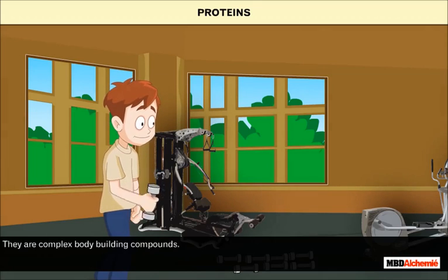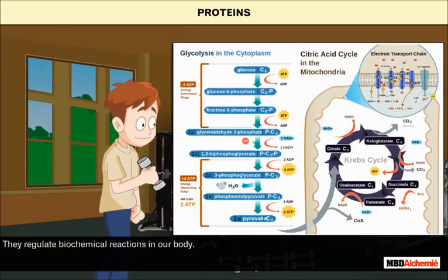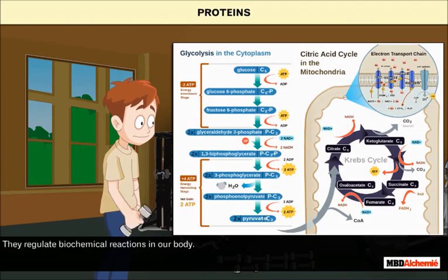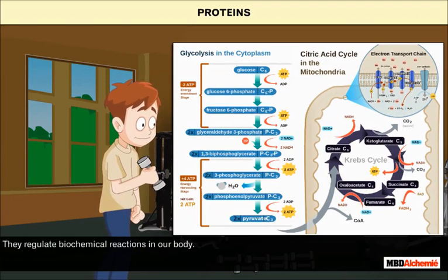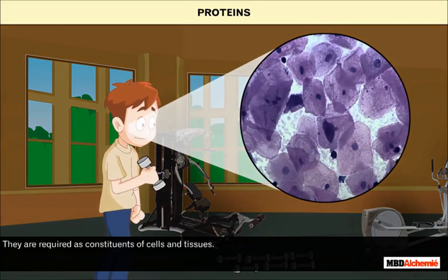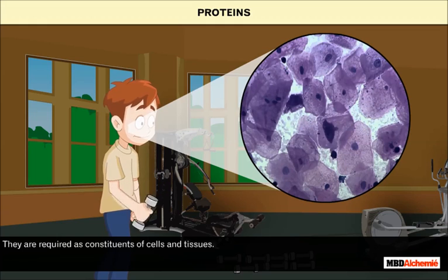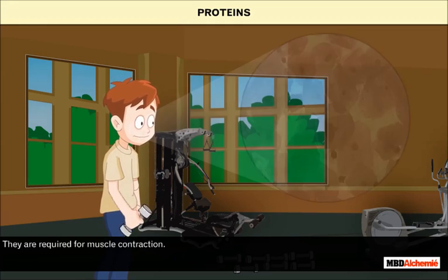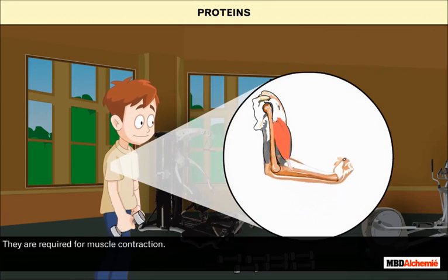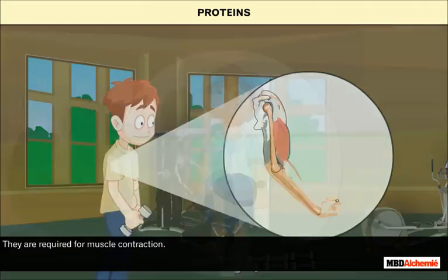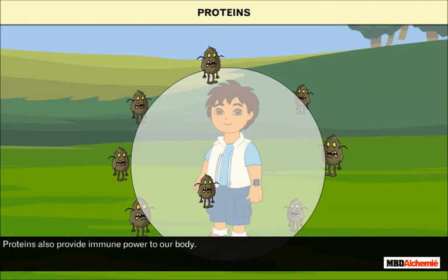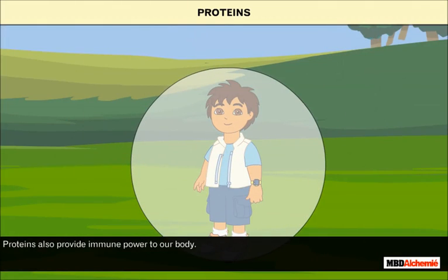Proteins are complex bodybuilding compounds. They regulate biochemical reactions in our body and are required as constituents of cells and tissues. They are required for muscle contraction and also provide immune power to our body.